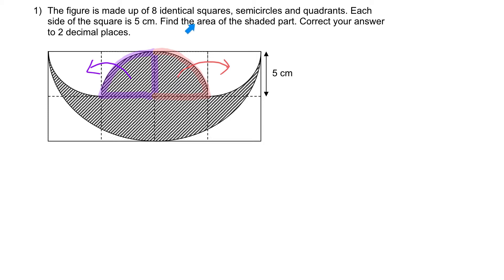So to find the area of the shaded part, all I have to do is take this entire semi-circle, subtract away these two squares and that will give me the answer.